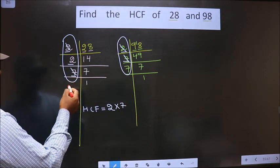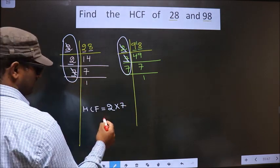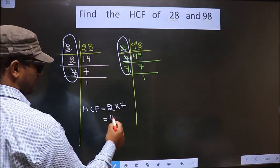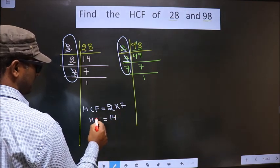No more numbers are left now. So now our HCF is 2 into 7, 14. 14 is our HCF.